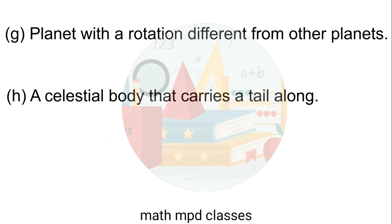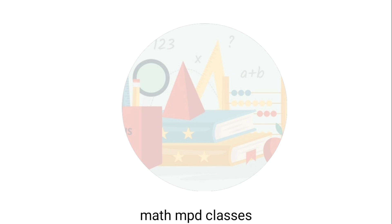Planet with rotation different from other planets — Answer: Venus. Next, a celestial body that carries a tail along — Answer: Comet.